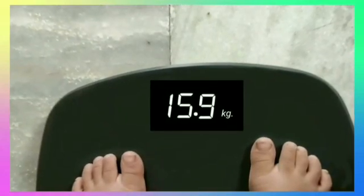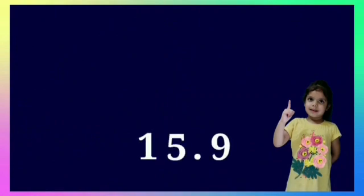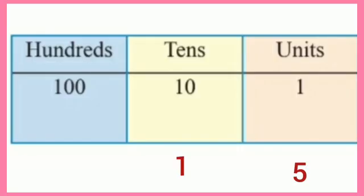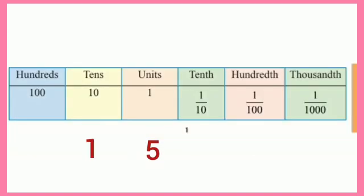The number obtained by weighing Sirat is in decimal form. From the decimal to the left-hand side, we know how to write digits in the base value table. We write 5 at the 1's place and 1 at the 10's place. But for the digits to the right side of the decimal, we expand the place value table from 1's to the right side. It has 10's, 100's and 1000's place. 9 is to the right side of the decimal and its place value is 10ths, so 9 is written at the 10ths place.